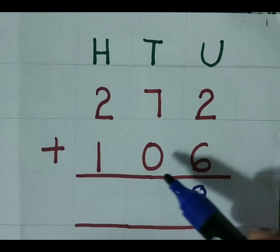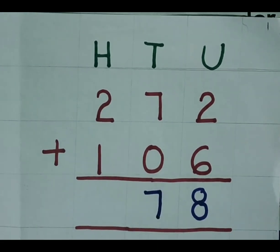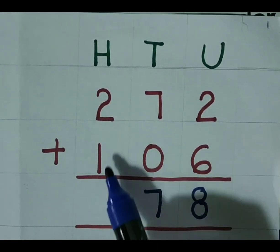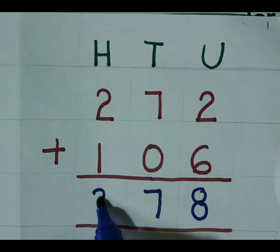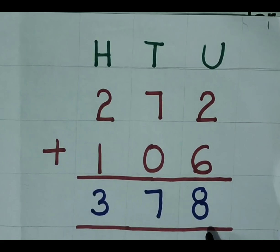7 plus 0. Any number plus 0 is same number 7, you will get here. 2 plus 1 is 3. The answer is 378.